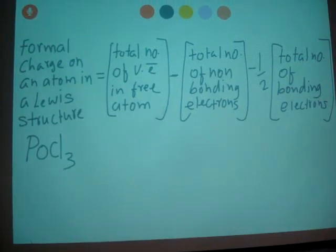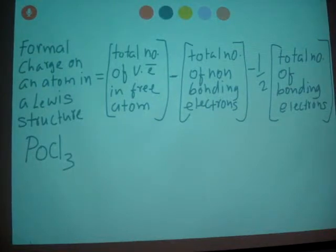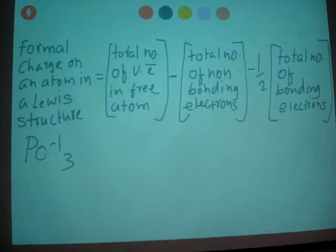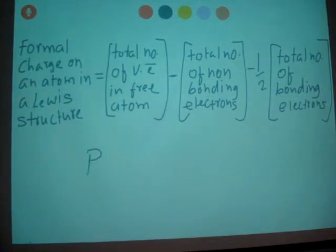So basically, formal charge on an atom—first you need to draw a Lewis dot structure, right? And you use this formula: number of valence electrons in the atom minus total number of non-bonding electrons and one half of total number of bonding electrons. So basically when we write for POCl3,